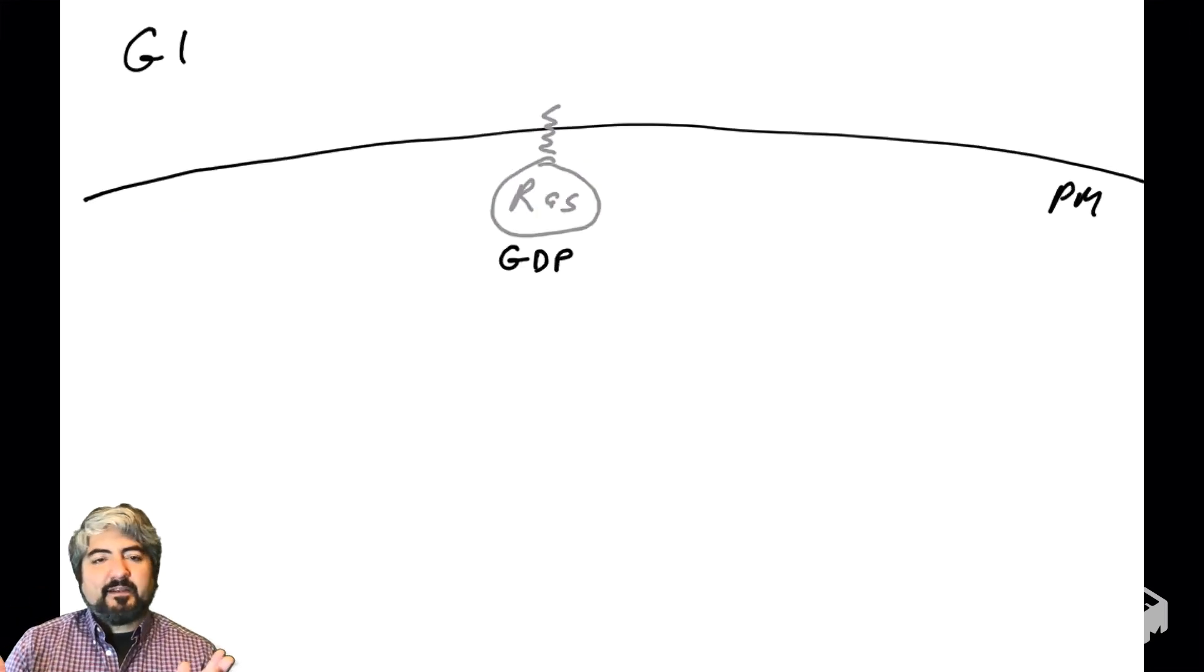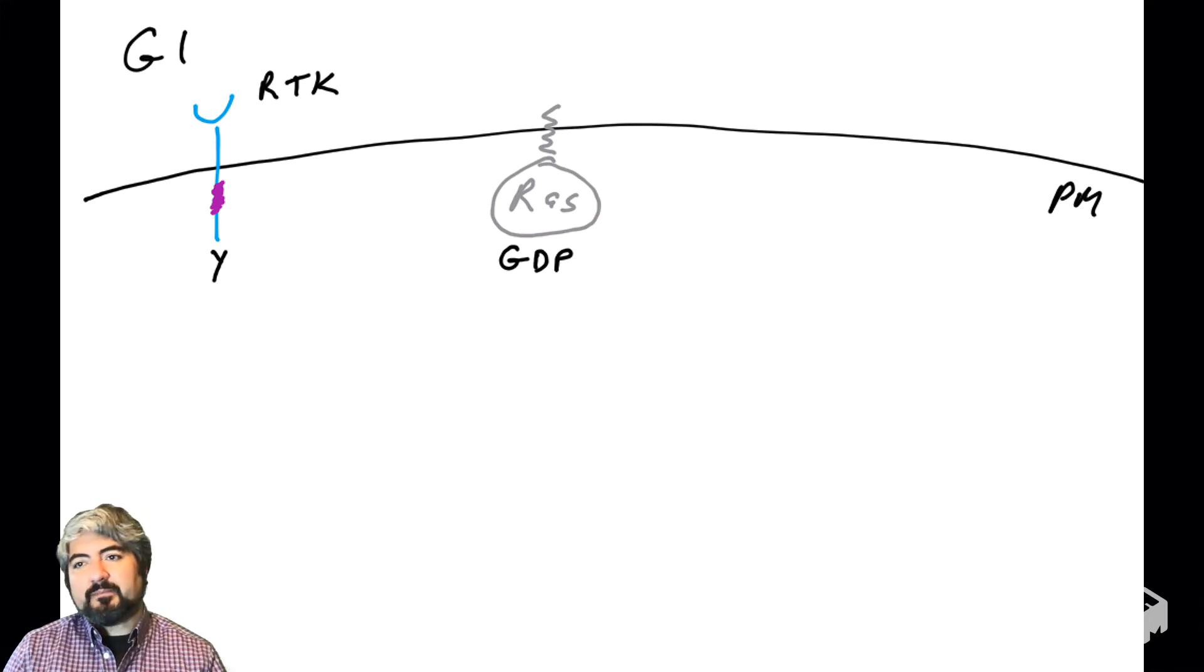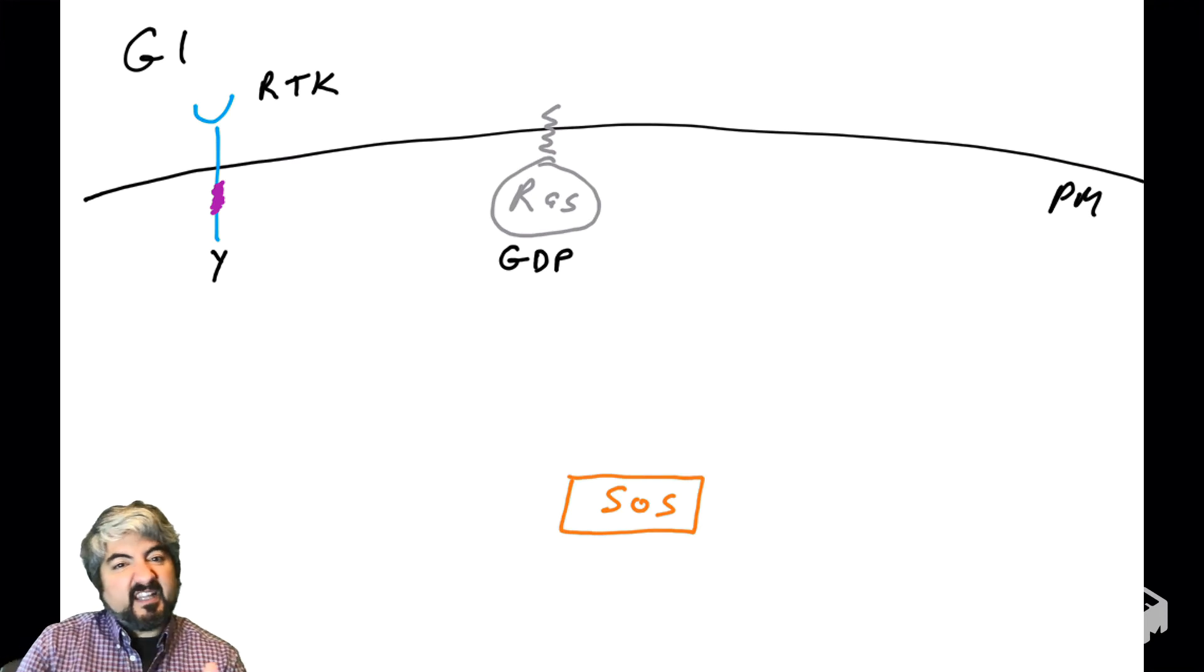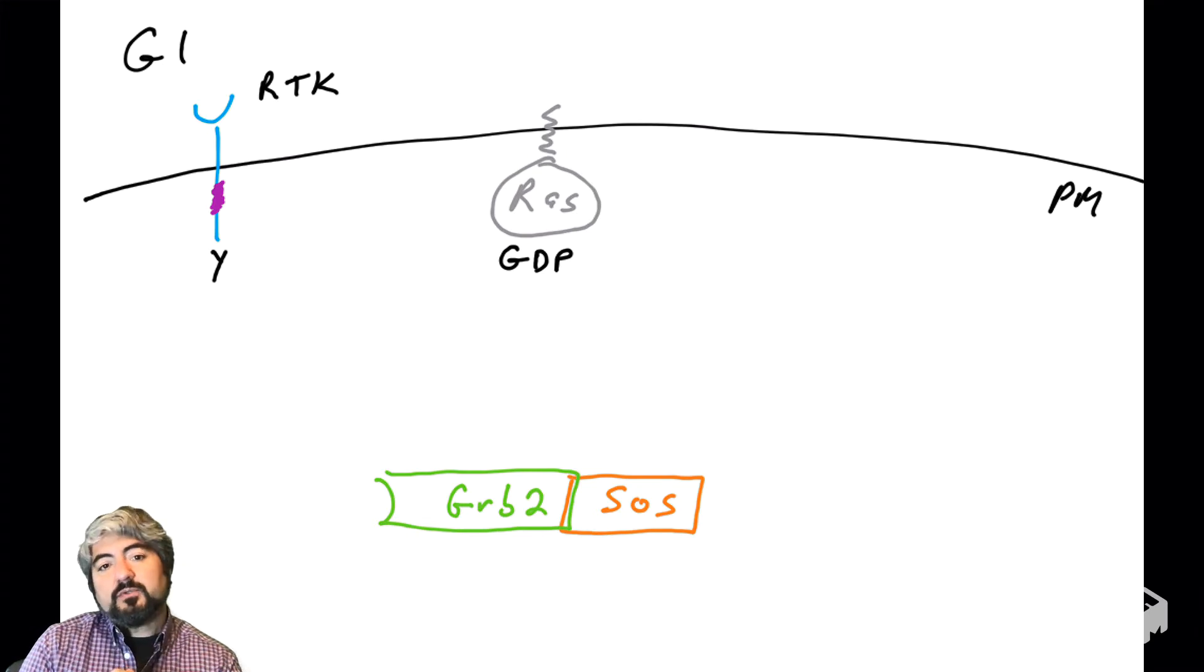Here is a cell that is in G1. RAS is bound to GDP. Let's add a receptor tyrosine kinase. This could be the EGF receptor, PDGF receptor, or FGF receptor, some receptor tyrosine kinase. The tyrosines are not phosphorylated because the cell is in G1. Let's add some other proteins. Let's add SOS. There it is in the cytosol.